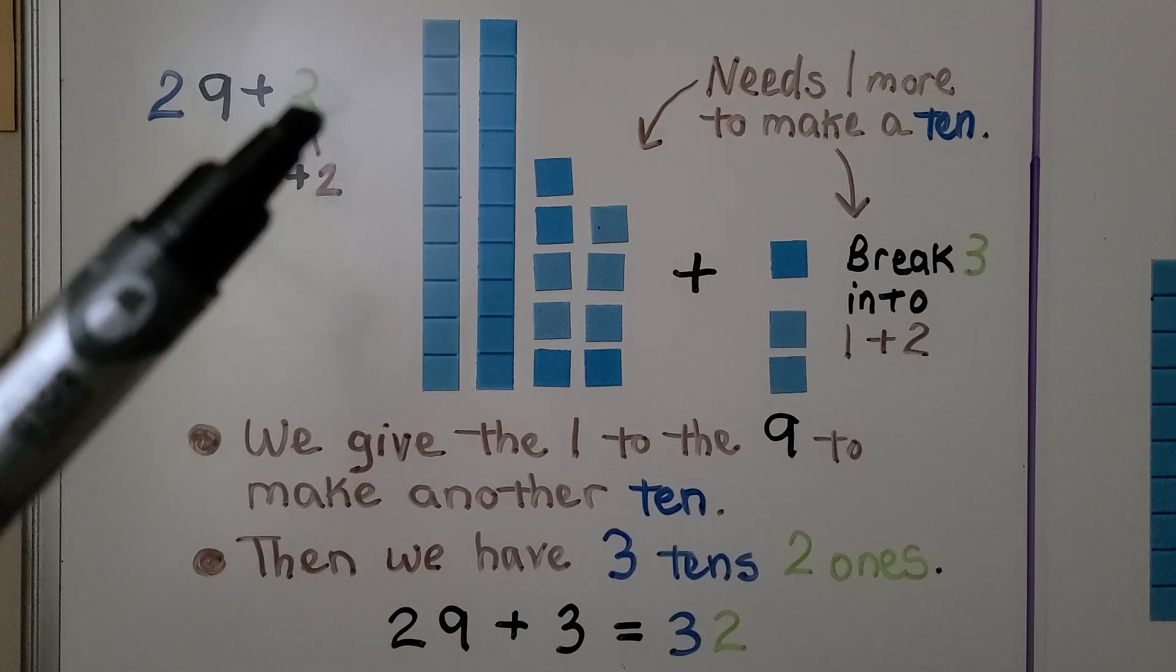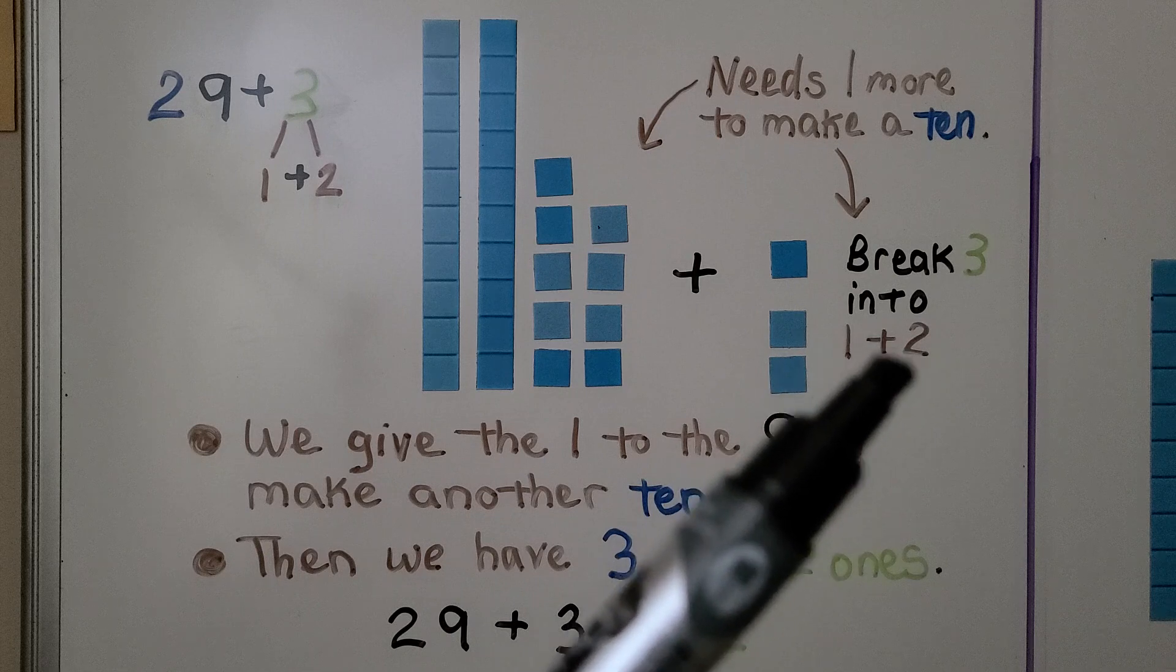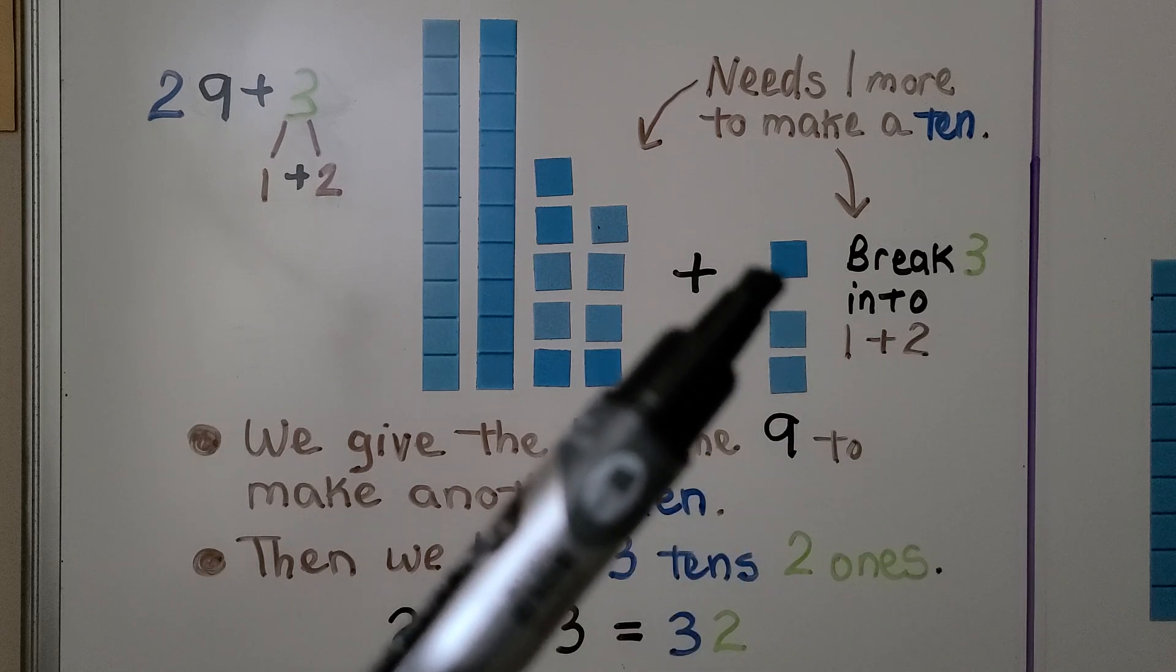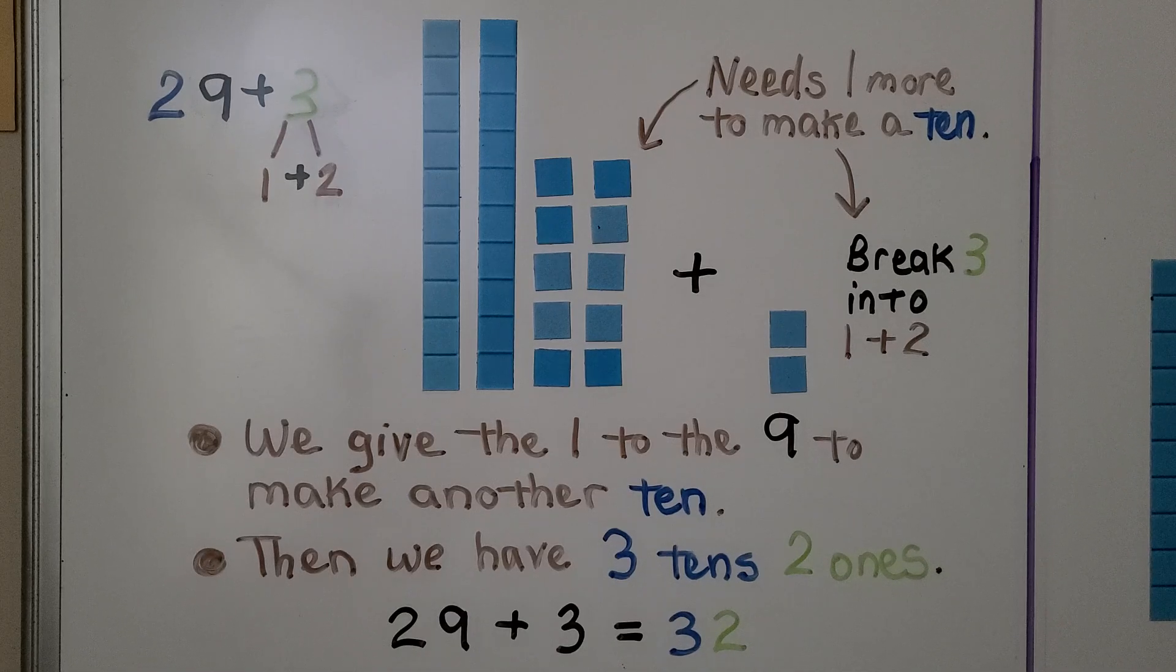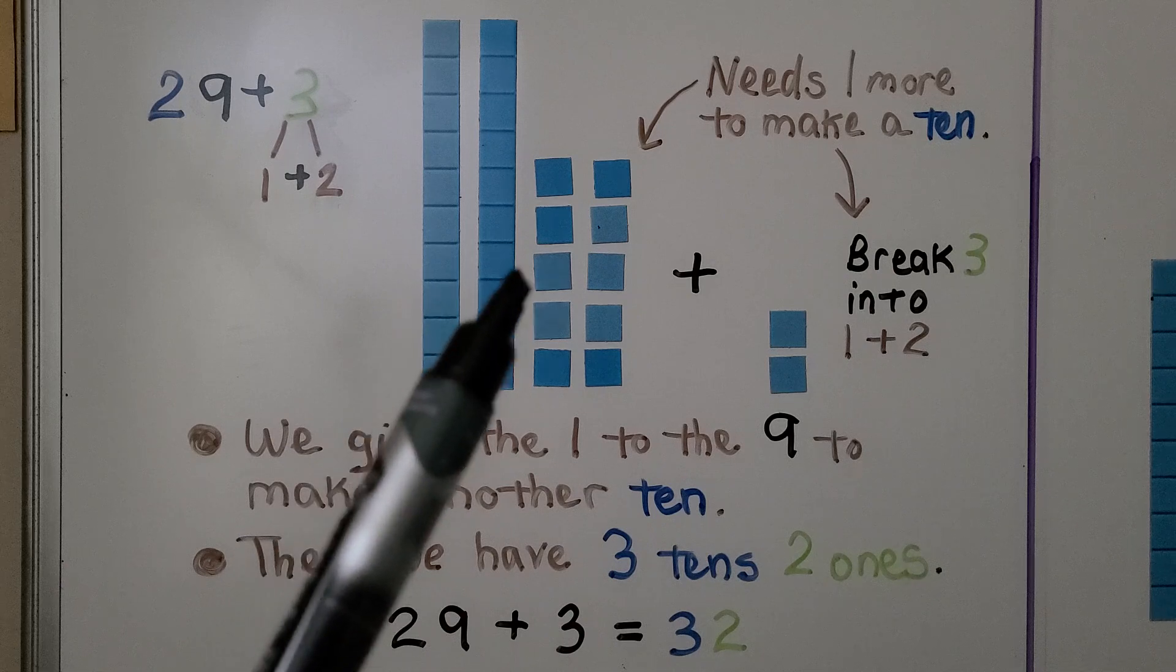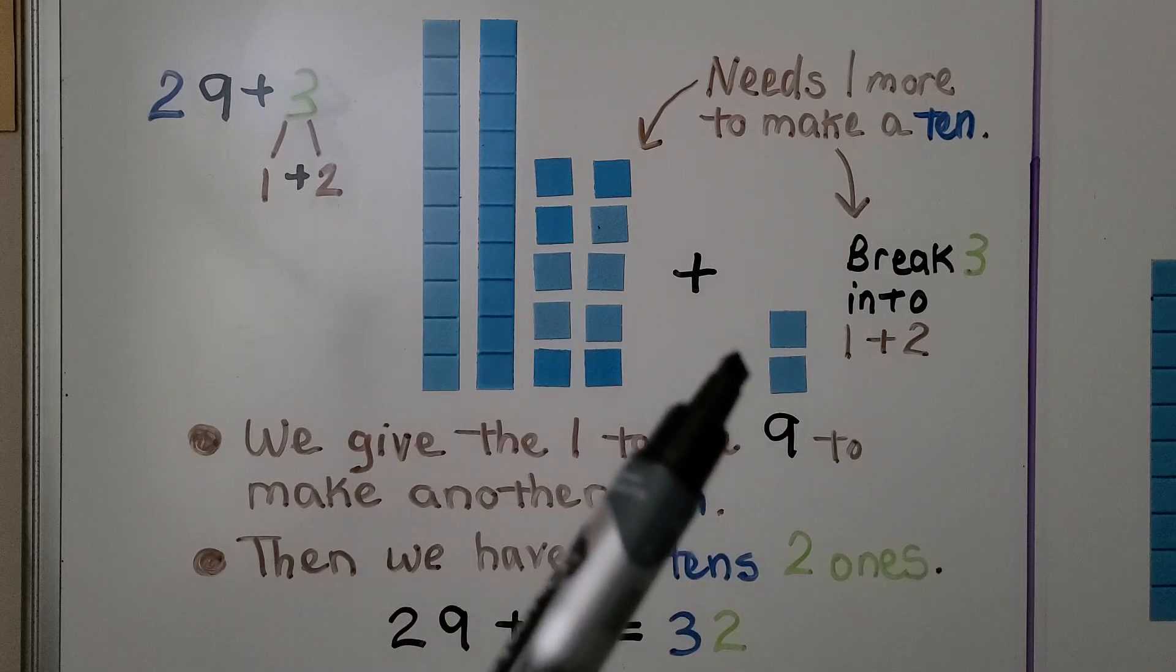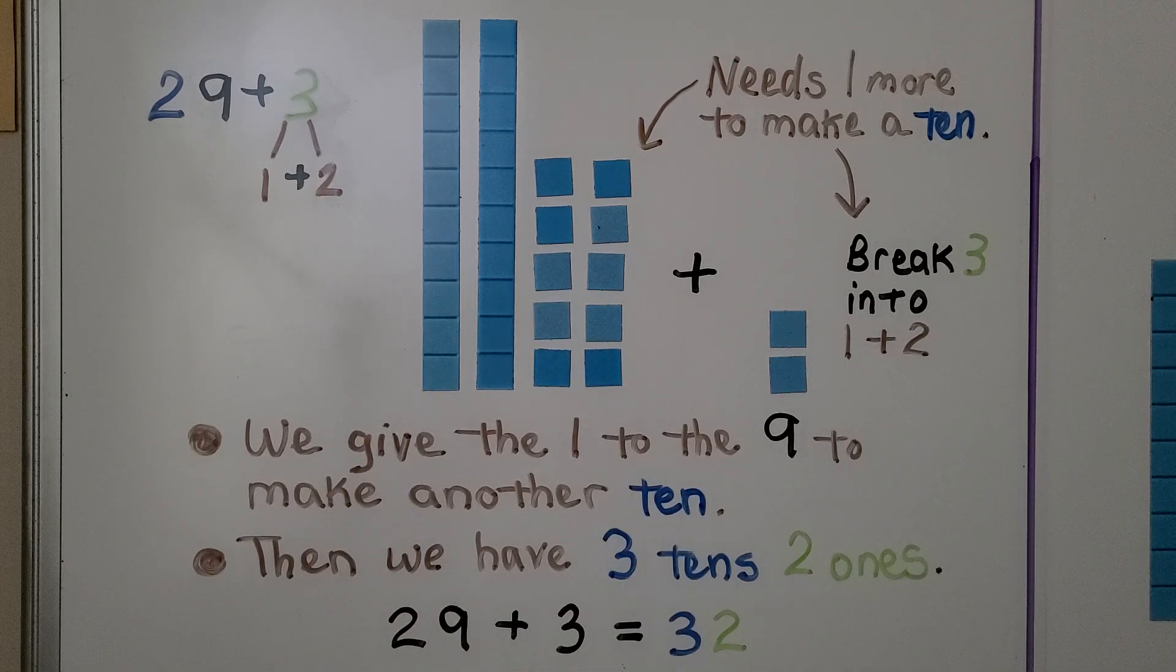So we break apart this 3 into a 1 plus a 2. We take this 1 and give it to the 9. We make another ten. Now we've got 1, 2, 3 tens, and 2 ones. 29 plus 3 is equal to 32.